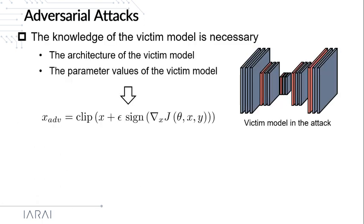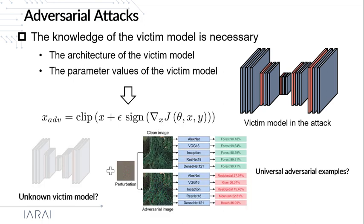One limitation of the aforementioned algorithms is their dependence on knowledge from the victim model, including its architecture and parameters, since we need all this knowledge to calculate the gradients. However, in practical application scenarios, this information would not be accessible in many cases. Therefore, the goal of this research is to generate universal Adversarial Examples for remote sensing data without any prior knowledge of the victim model, with the generated examples expected to deceive deep neural networks with different architectures.